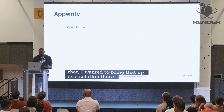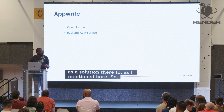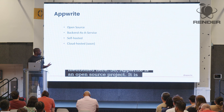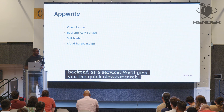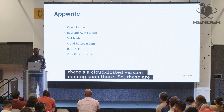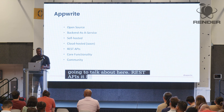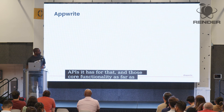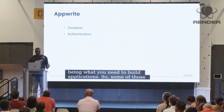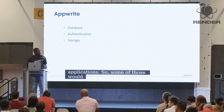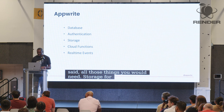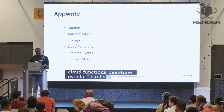AppWrite is an open source project — it's a Backend as a Service. It's self-hosted, with a cloud-hosted version coming soon. It provides REST APIs and the core functionality you would need to build applications: database, authentication, storage for media or files, cloud functions, real-time events, and the ability to target multiple platforms. These are things that can make the development process easier.